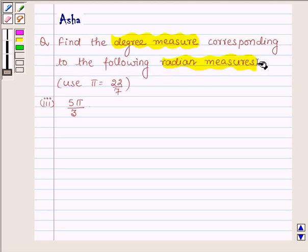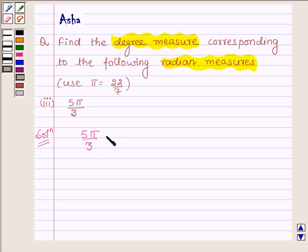Third is 5π/3. So let us begin with the solution and we are given 5π/3 radian